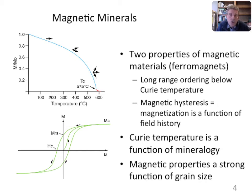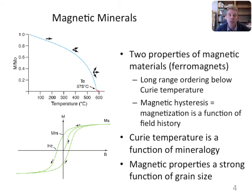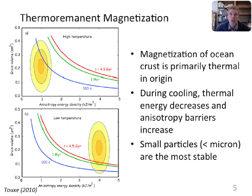Starting at the origin of the hysteresis diagram — B is the applied field on the horizontal axis, M is the magnetization — applying a field causes the green curve to rise and saturate. Reversing the field back to zero leaves the magnetization at the point labeled Mrs. Going around the loop, negative fields produce the opposite magnetization direction. This hysteresis property is a function of crystalline anisotropy: there are easier and harder directions to magnetize the grain, and it takes energy to switch between easy directions.